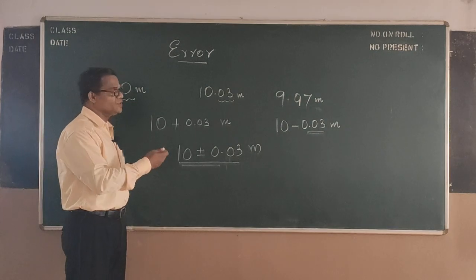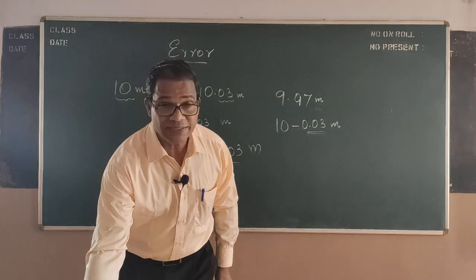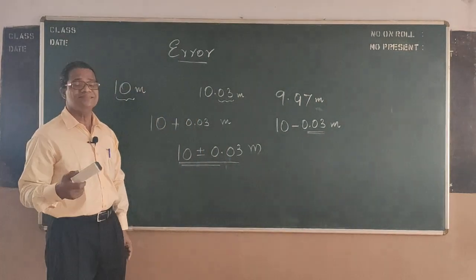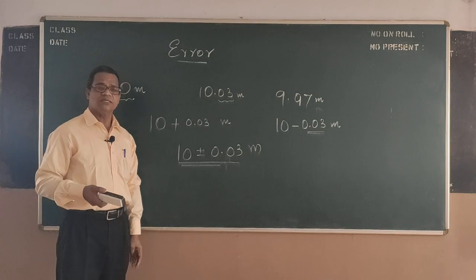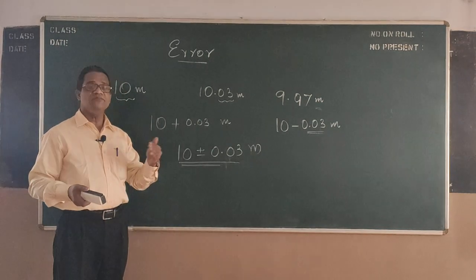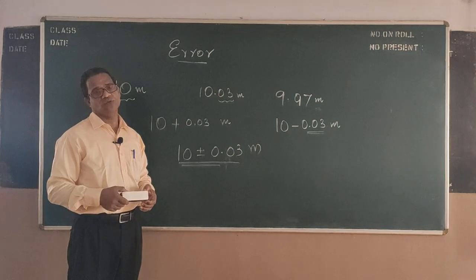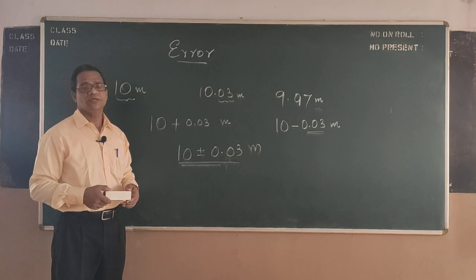Like this you can have errors in your measurement. So what is an error? If the question comes like that, you can say it is a deviation from the actual value to the measured value.